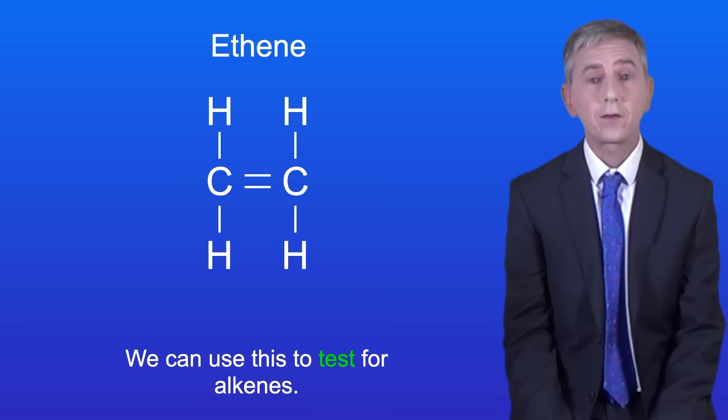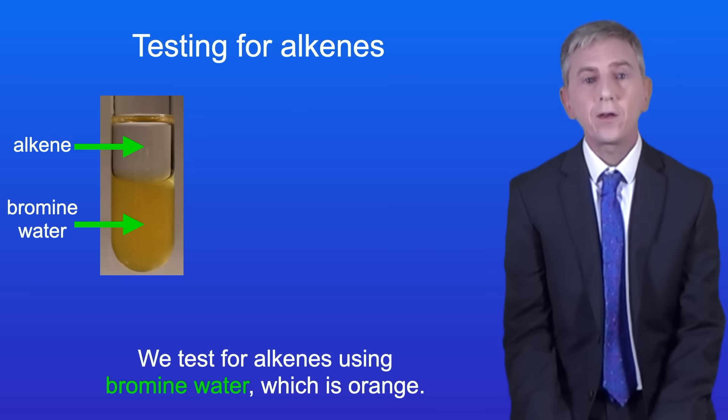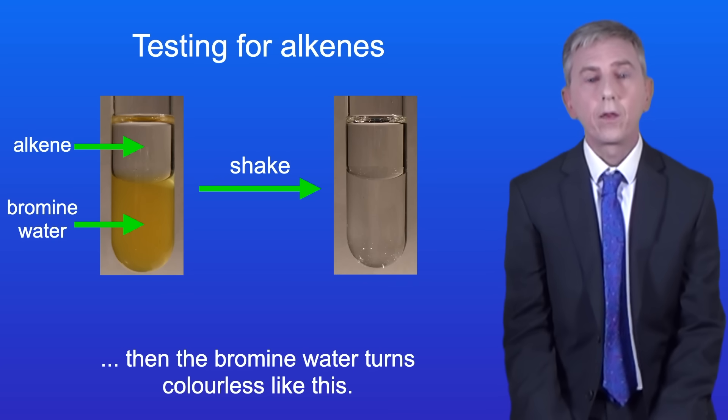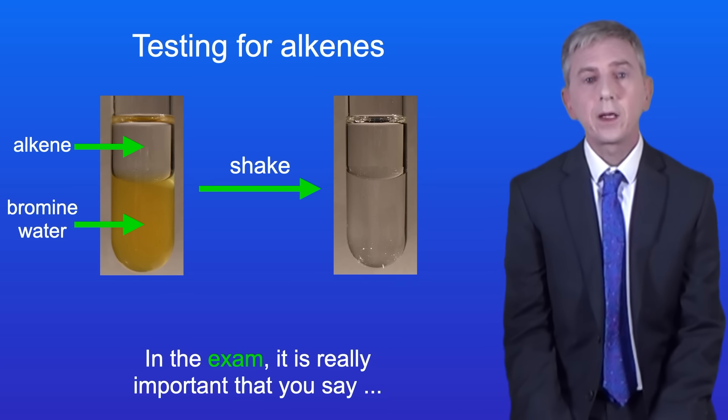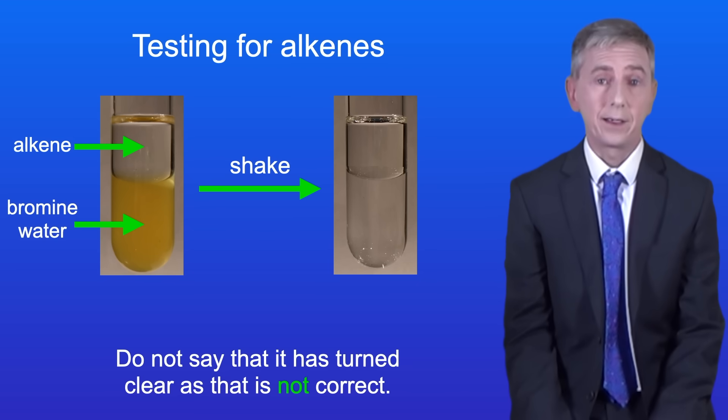We can use this to test for alkenes and it's really important that you learn this test. We test for alkenes using bromine water which is orange. If we shake our alkene with bromine water then the bromine water turns colourless like this. Now in the exam it's really important that you say that the bromine water has turned colourless. Do not say it's turned clear as that's not correct.